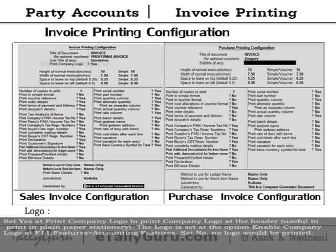At company logo, set yes. At print company logo at the header — useful to print on plain paper stationery. The logo is set at the option Enable Company Logo at F11 Features, Accounting Features. Set no to omit the logo.